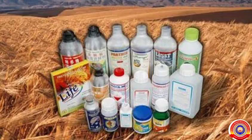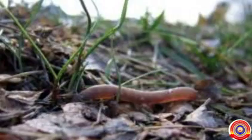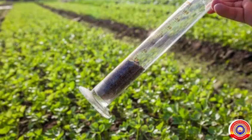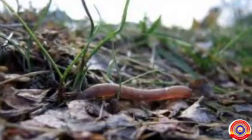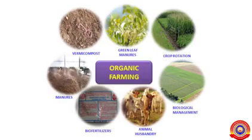Chemical pesticides destroy not only the harmful insects which destroy the crops but also harmless microorganisms. Chemical fertilizers increase the amount of certain components in the soil and cause the destruction of earthworms and other microorganisms found in the soil. Instead of using chemical pesticides and fertilizers, we can use bio-pesticides and bio-fertilizers.